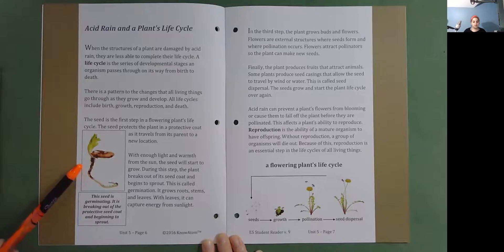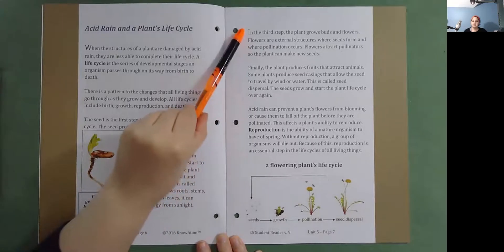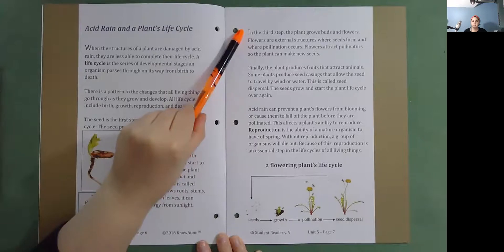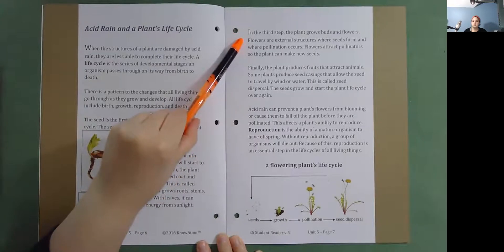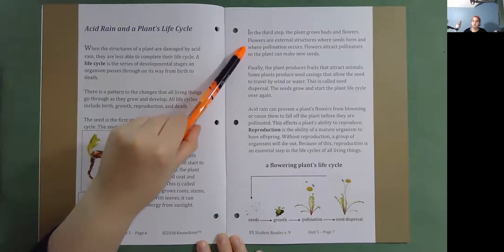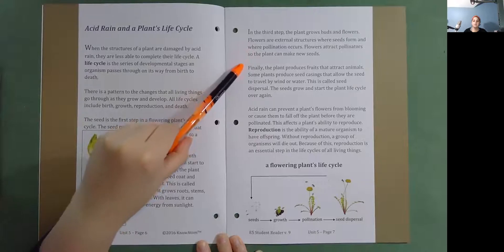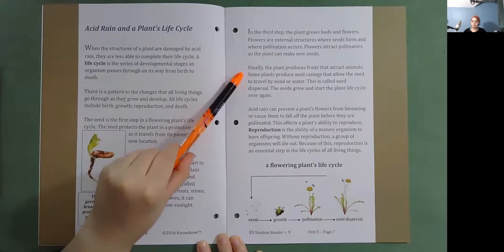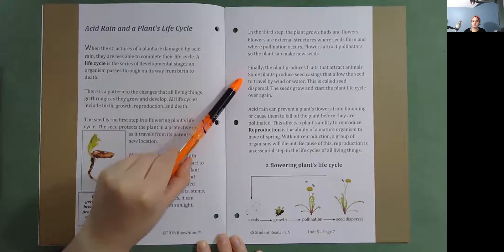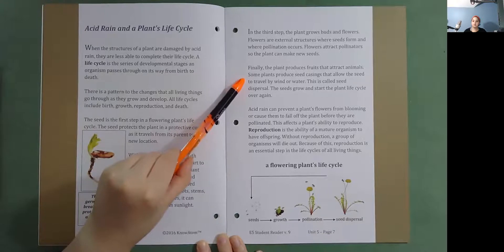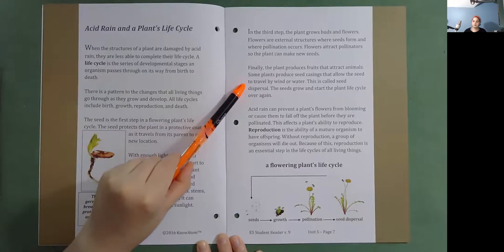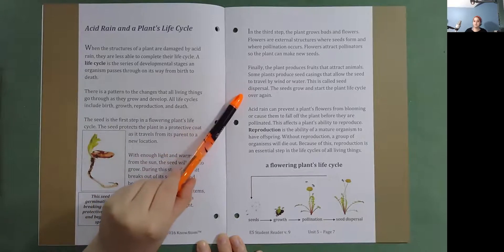In the third step, the plant grows buds and flowers. Flowers are external structures where seeds form and where pollination occurs. Flowers attract pollinators so the plant can make new seeds. Finally, the plant produces fruits that attract animals. Some plants produce seed casings that allow the seed to travel by wind or water. This is called seed dispersal. The seeds grow and start the plant life cycle over again.